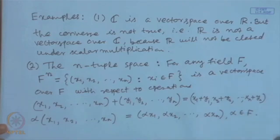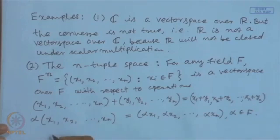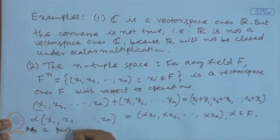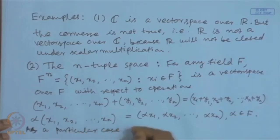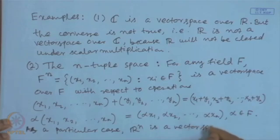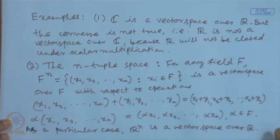As a particular case, R^n is a vector space over R, and R^n is also called the n-dimensional Euclidean space.